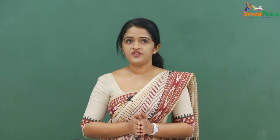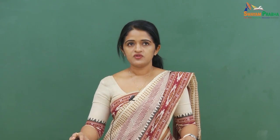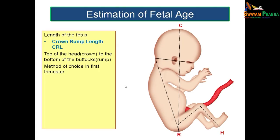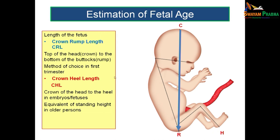The fetal age can be estimated based on length measurements. The first is Crown Rump Length (CRL), measured from the top of the head or crown to the bottom of the buttocks or rump. This is the method of choice for assessing fetal age in the first trimester. Another measurement is Crown Heel Length, taken from the crown of the head to the heel — equivalent to standing height in older persons.